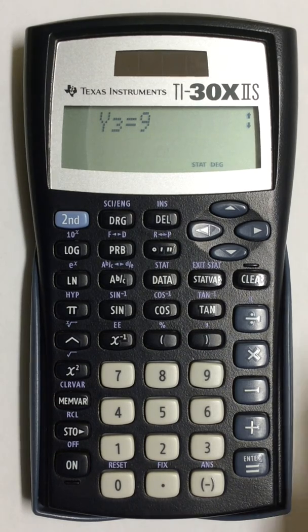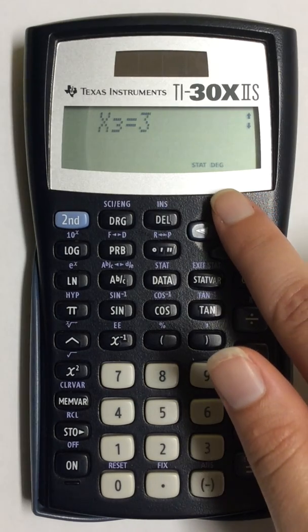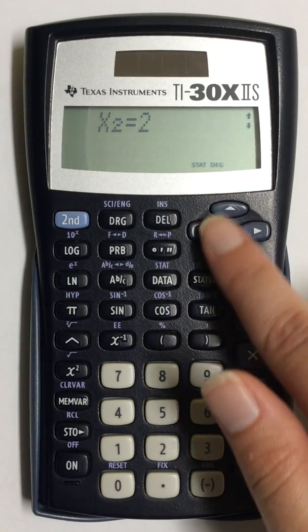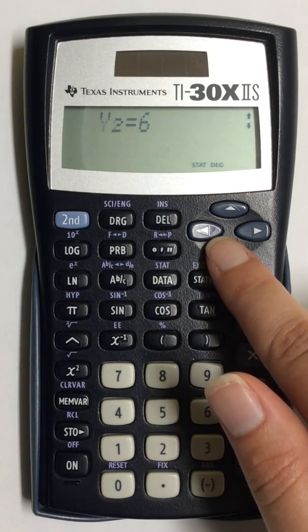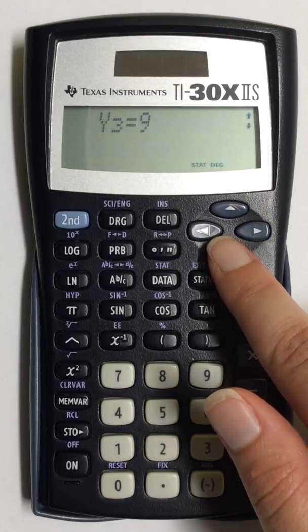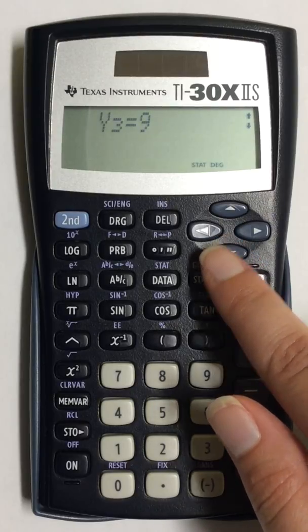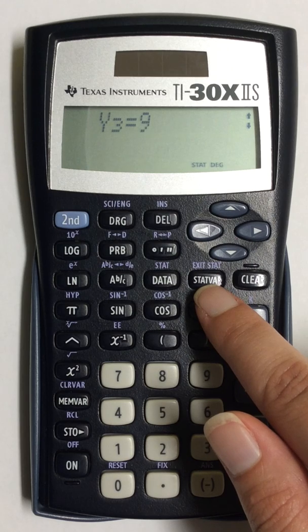I already have numbers plugged into my calculator, so to find the correlation coefficient, I'm going to press the STATVAR button.